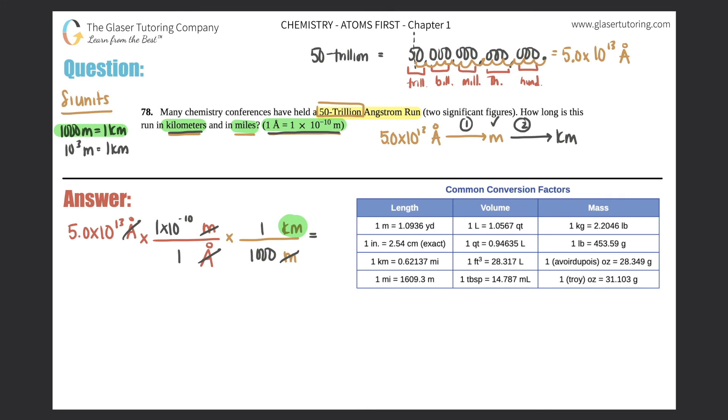So I'm going to multiply the top: I got 5 times 10 to the 13th times 1 times 10 to the negative 10th. So I get basically five thousand. So I have five thousand divided by one times a thousand, which is just a thousand. So when you do this division, you get five. But we need two sig figs because they told us two significant figures in the given, so I need two significant figures at the end. So it has to be 5.0 kilometers. So that would be the answer in kilometers. So this chemistry conference—they're so cool, right? They're doing a 50 trillion angstrom race, but technically they're only running a 5k race, right? 5k stands for five kilometers. So 5.0 kilometers—that would be the answer in kilometers. Now we just got to find out what it is in miles.